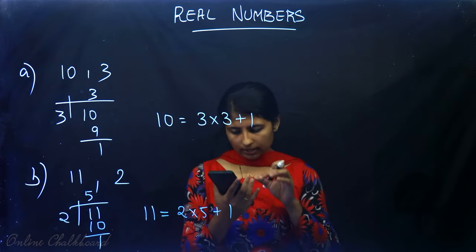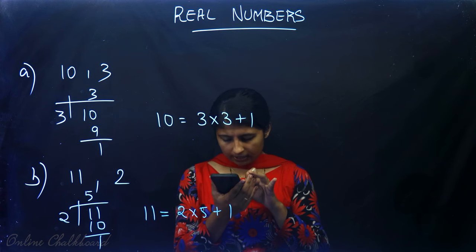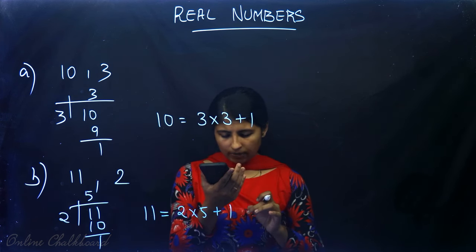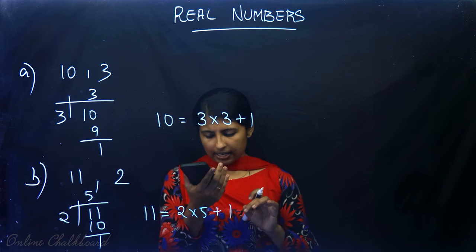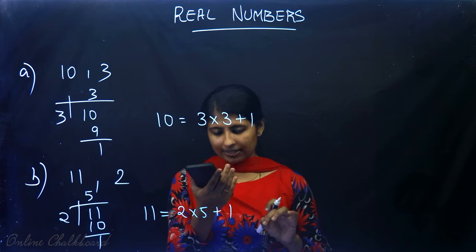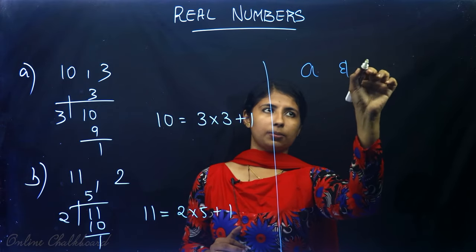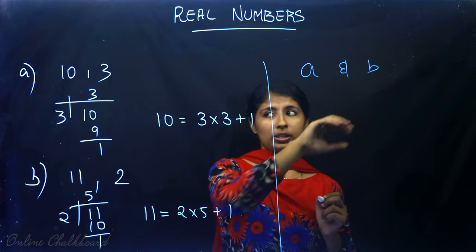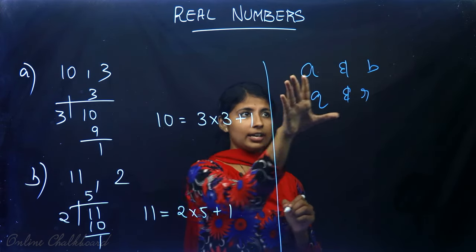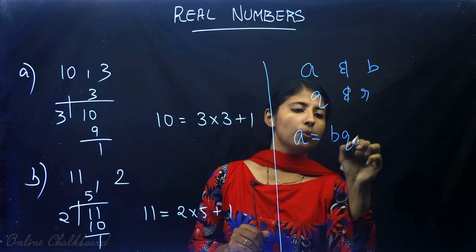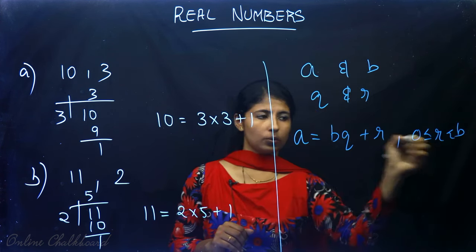It's given on page number 3, Theorem 1.1 — Euclid's Division Lemma. Given positive integers A and B, there exist integers Q and R satisfying A = BQ + R, where 0 ≤ R < B. That means for any two integers A and B, there exist two more integers Q and R such that A = BQ + R, with R greater than or equal to 0 and less than B.